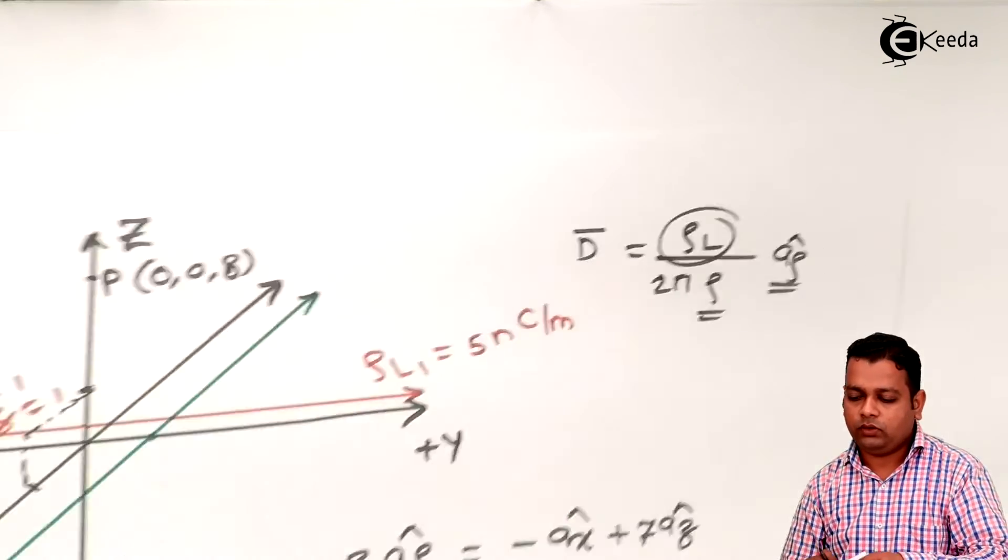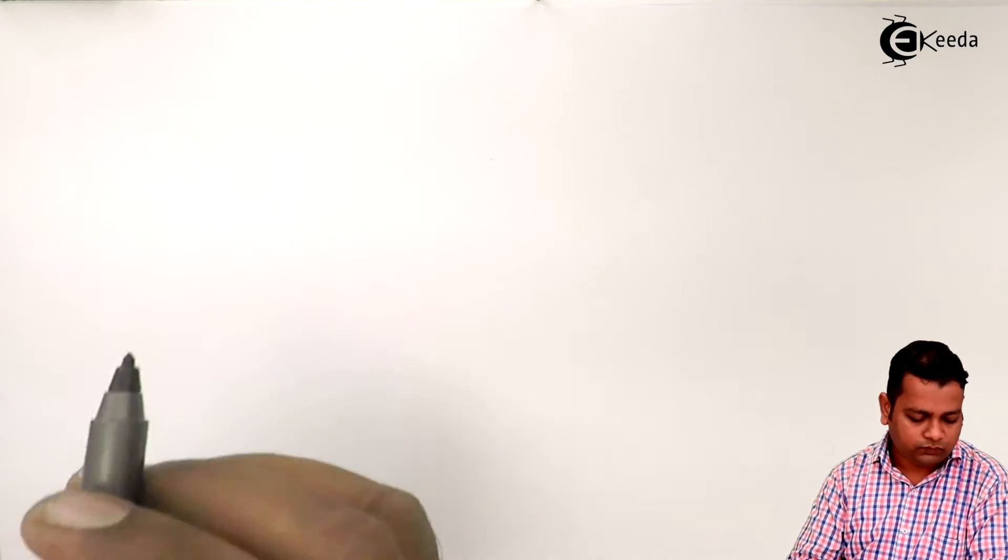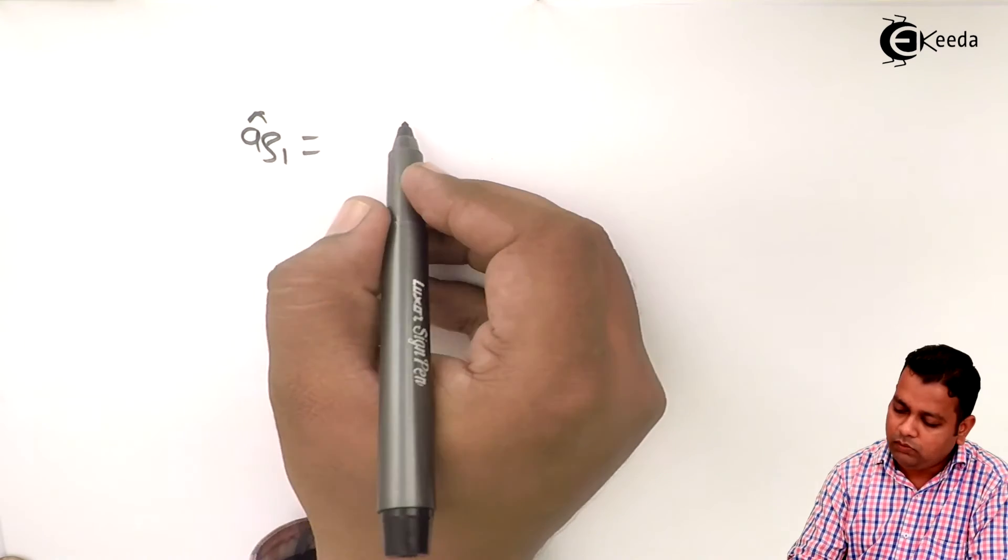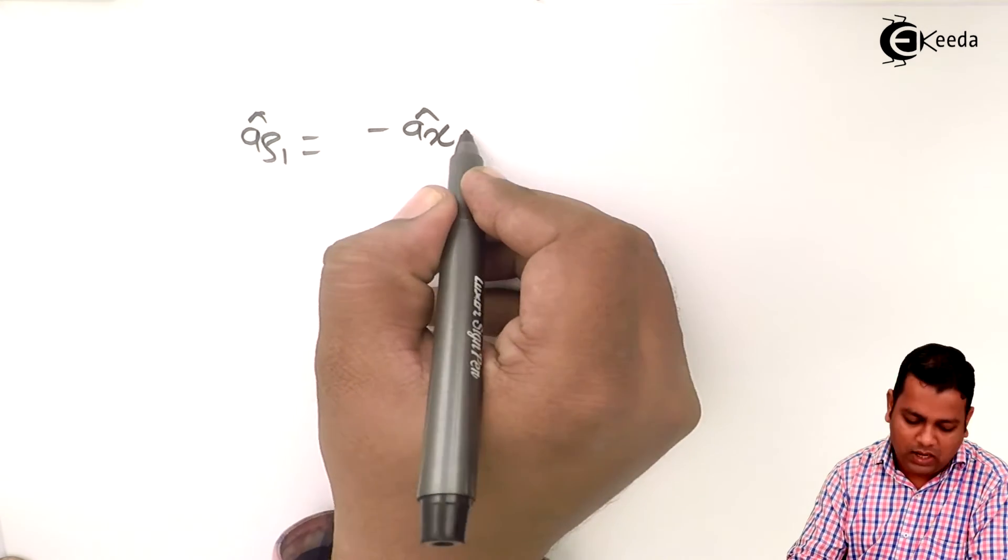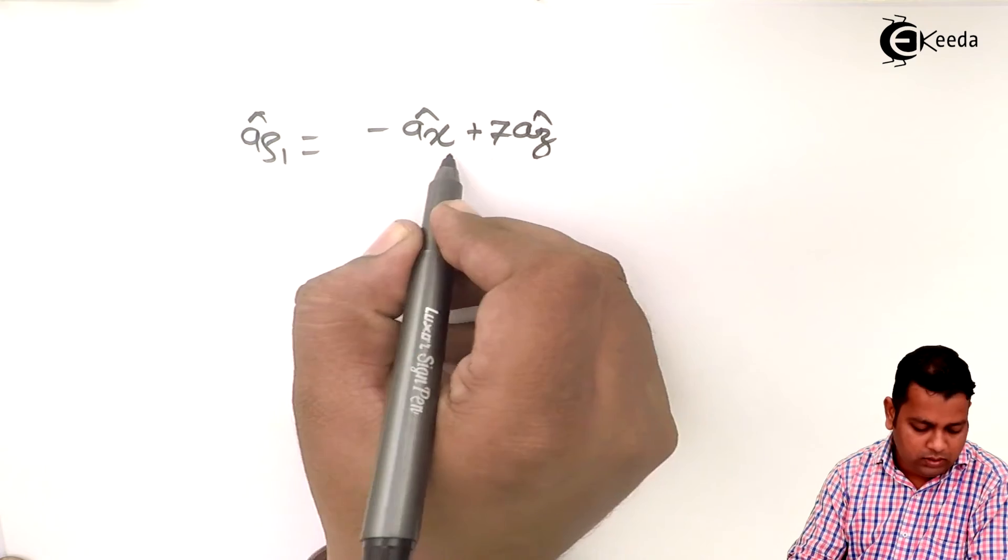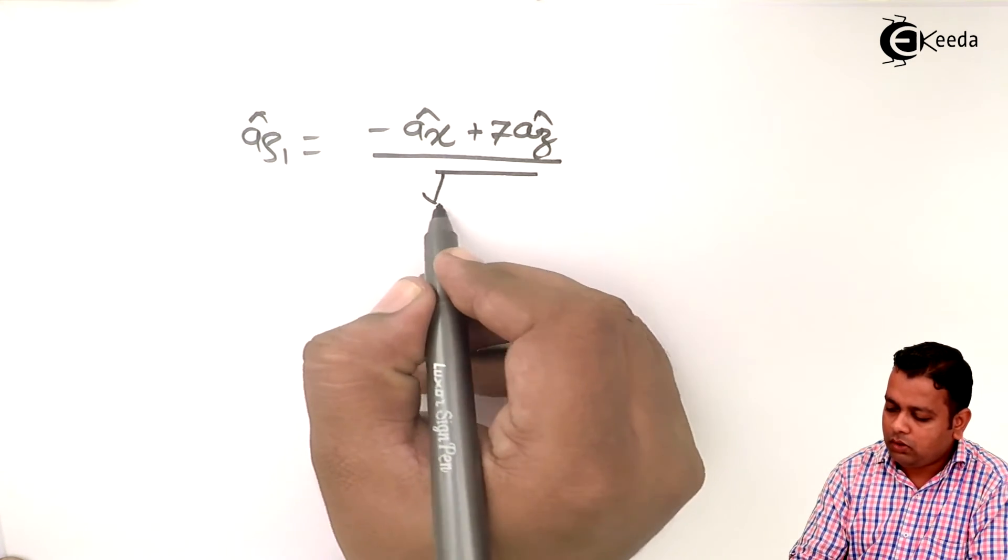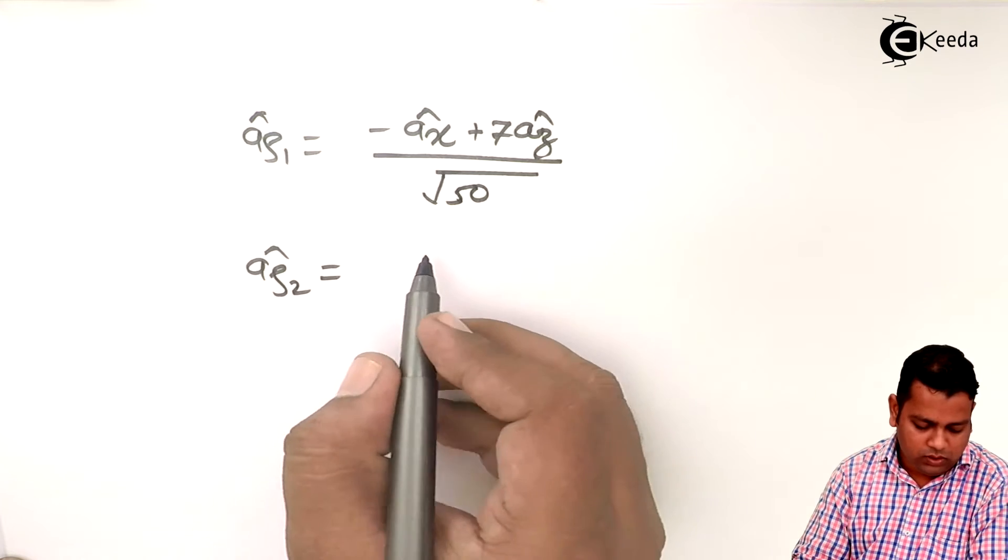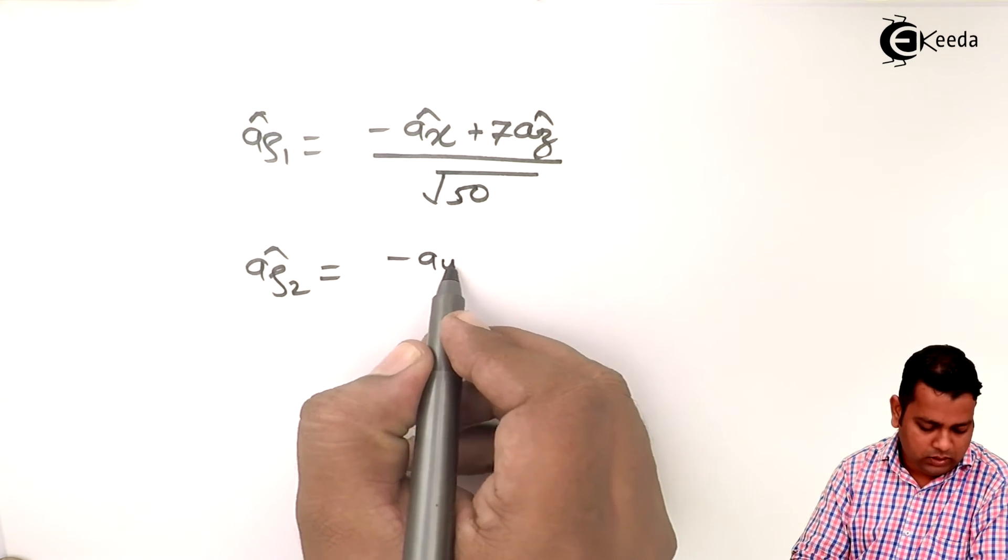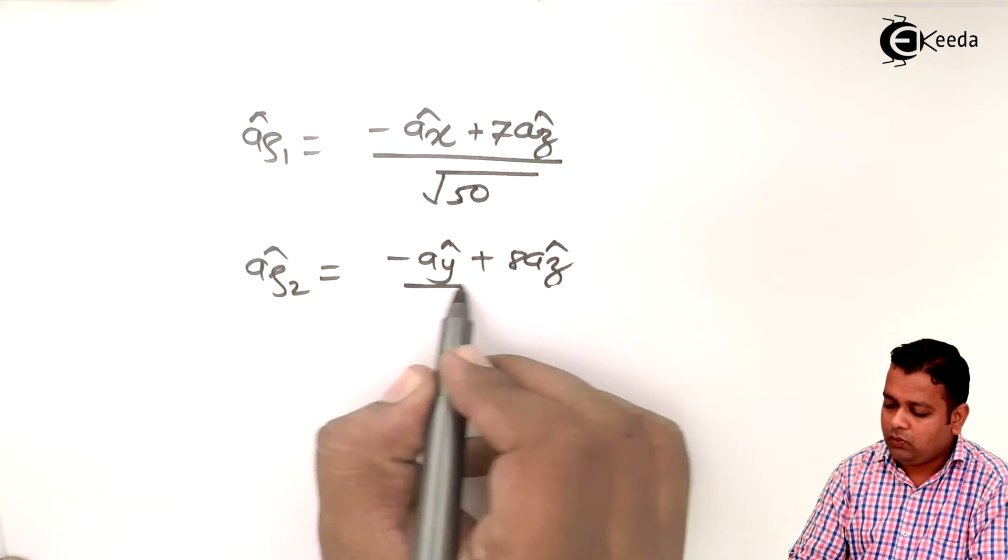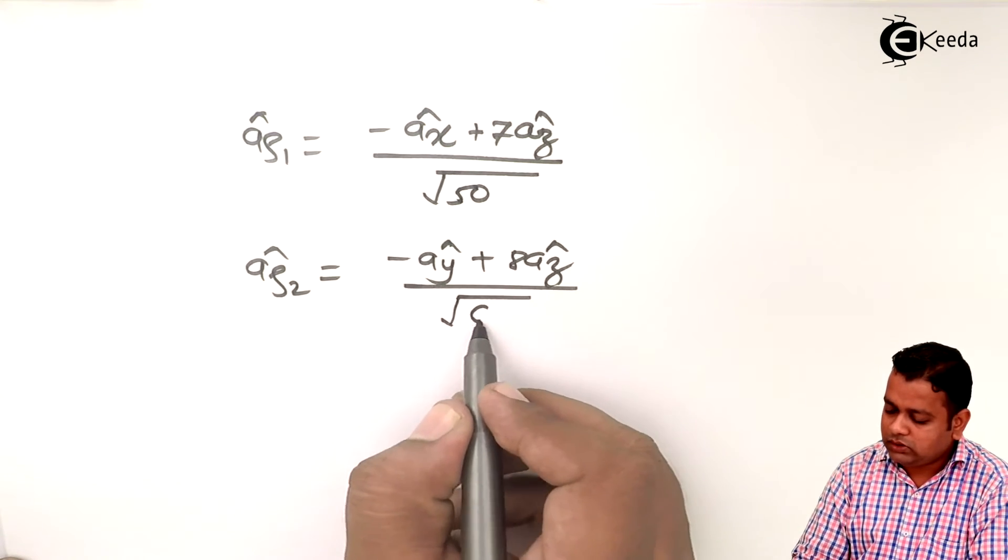So according to the geometry into the figure, we have these values: minus Ax cap plus 7Az cap, then minus Ay cap plus 8Az cap. Correspondingly, the unit vectors will be: A ρ1 cap will be given by minus Ax cap plus 7Az cap divided by under root 50, whereas A ρ2 cap will be equal to minus Ay cap plus 8Az cap divided by under root 65.